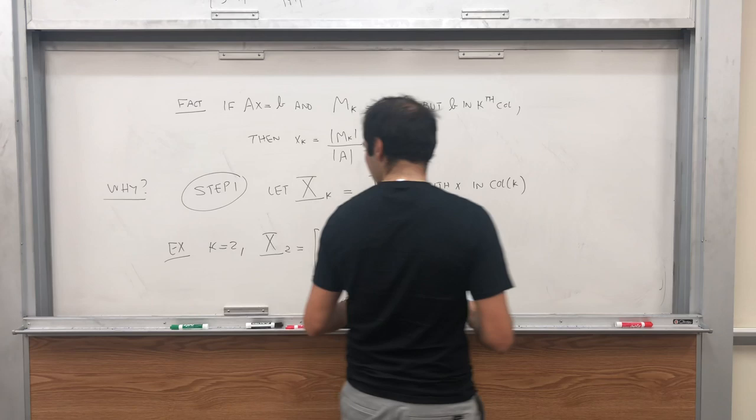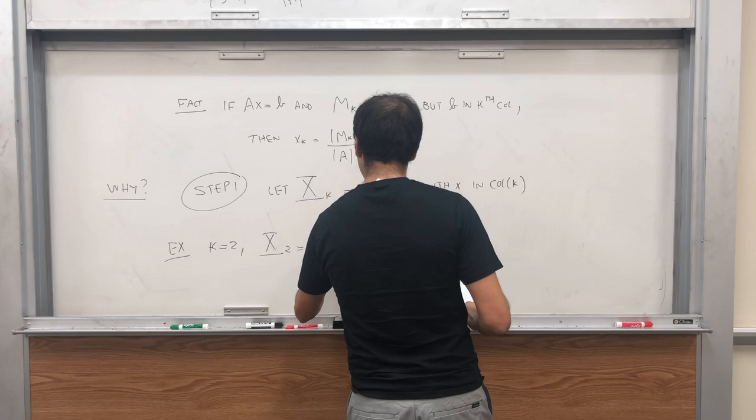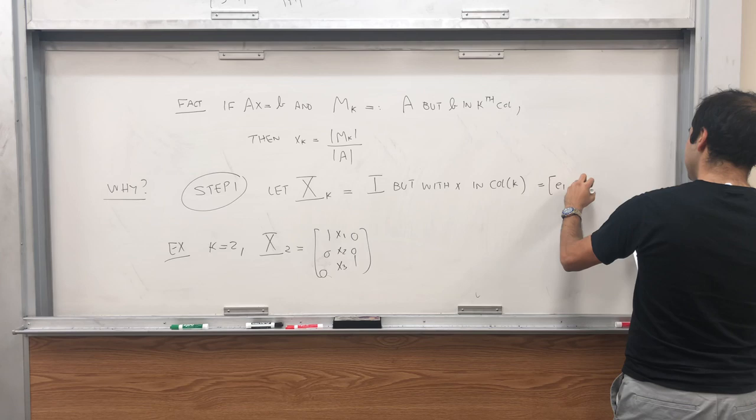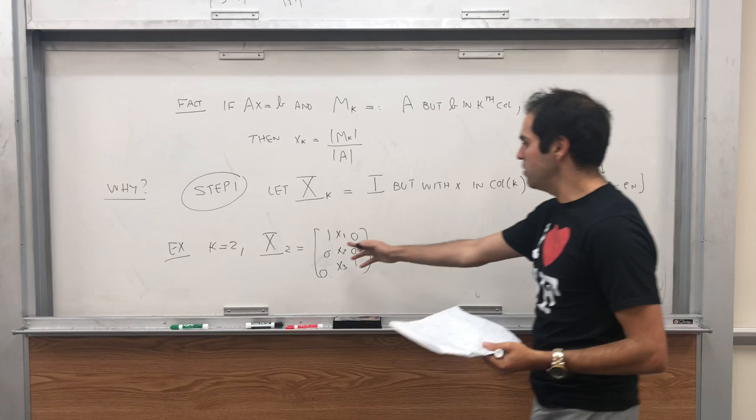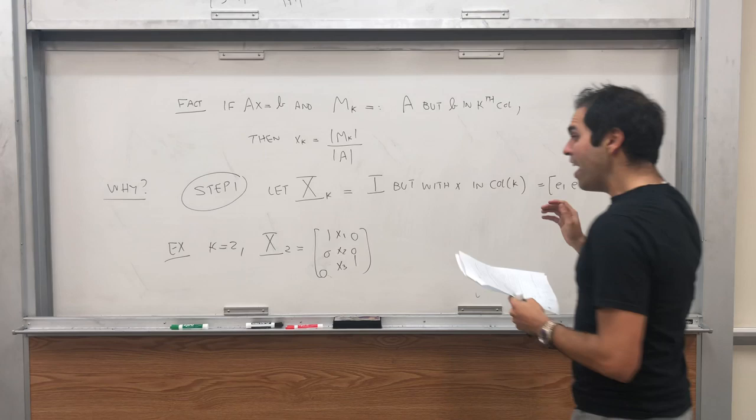So let me just give you an example. Suppose in the 3 by 3 case, if k is 2, then X2, again it looks like the identity, so one with a bunch of zeros, but in the second column here we have our unknown x1, x2, x3. So if you want to write it this way, it's just e1, e2, x, and then en in the kth column, where e1 are just the standard basis vectors. So e1 is [1, 0, 0], e3 is [0, 0, 1], e2 would be [0, 1, 0], etc.